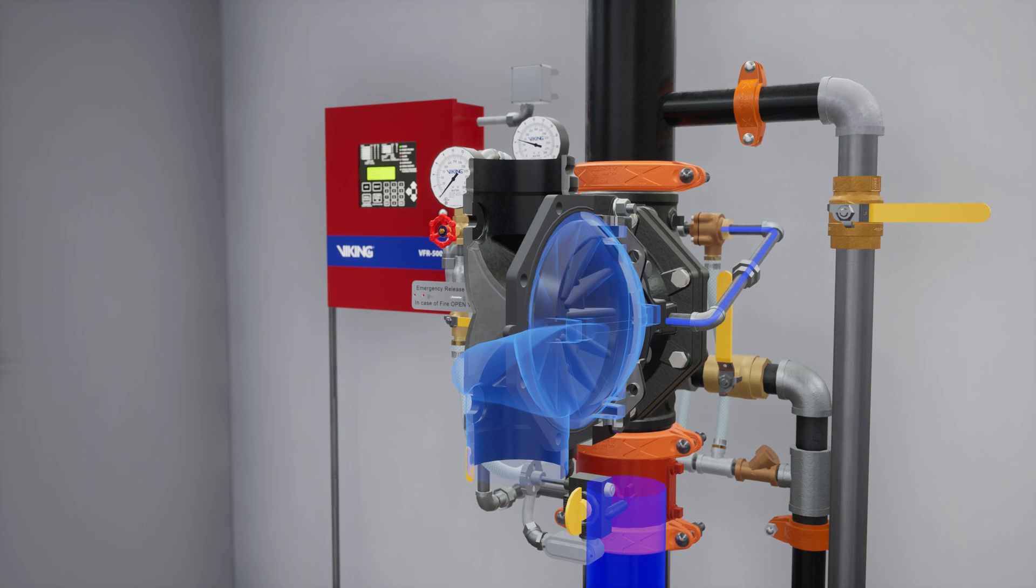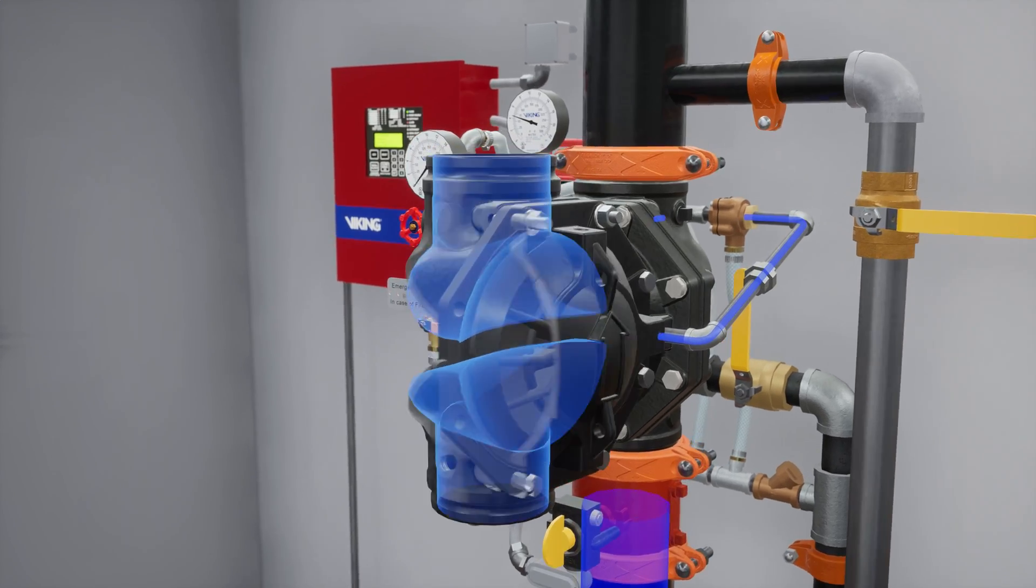Once water pressure is released from the priming chamber, the clapper is forced open by the supply water pressure from the inlet chamber, filling the valve body and connected trim with water.